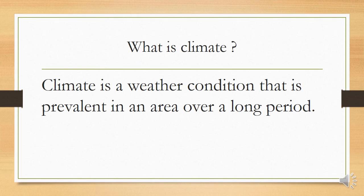Now boys and girls, we had distinguished the difference between weather and climate in our previous lessons and we established that climate is a weather condition that is prevalent in an area over a long period of time while weather is the day-to-day changes in the atmosphere.